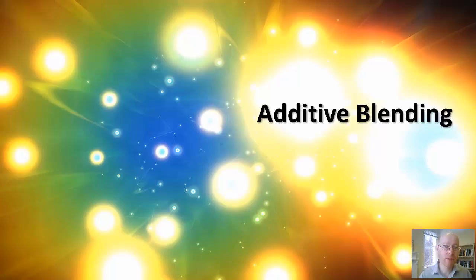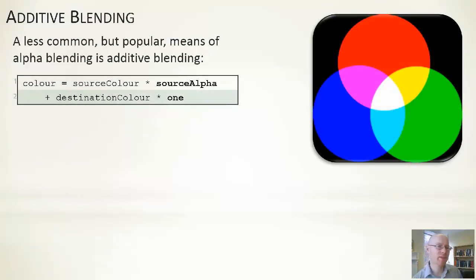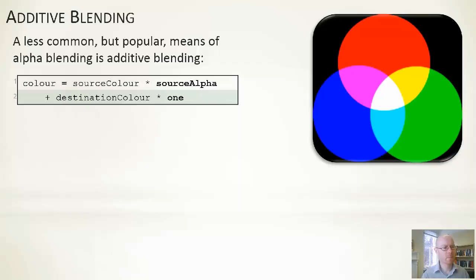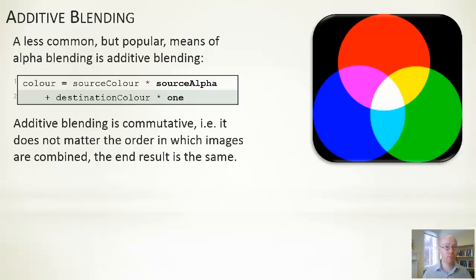Additive blending has a quite simple equation: source colour × source alpha + destination colour × 1. We retain all of the destination colour unchanged and simply add to it the source colour times source alpha. It is commutative — it doesn't matter which order you combine images because it's an additive process. Any number of images combined with additive blending in any sequence will give the same output.